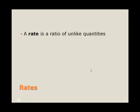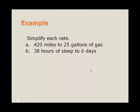So a rate is a ratio of unlike quantities, quantities with different units. So we have, for example, part A here, 420 miles to 25 gallons of gas. So let's write that as a ratio, and a rate is basically a ratio with different units.